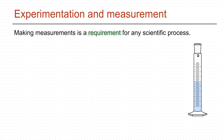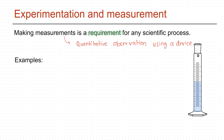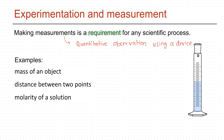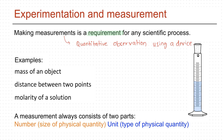Making measurements is a requirement for any scientific process. A measurement is a quantitative observation an experimenter makes using some device. Some examples of measurements are measuring the mass of an object, or distance between two points, or molarity of a solution. A meaningful measurement always consists of two parts: a number describing the size of the physical quantity, and a unit describing the type of the physical quantity.